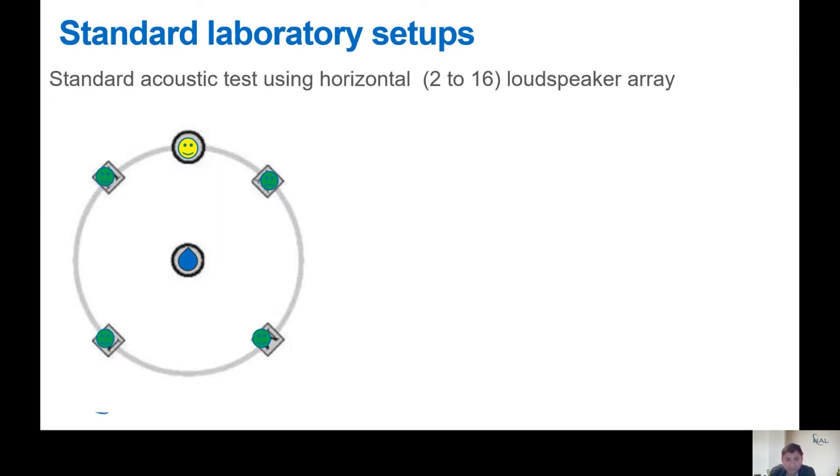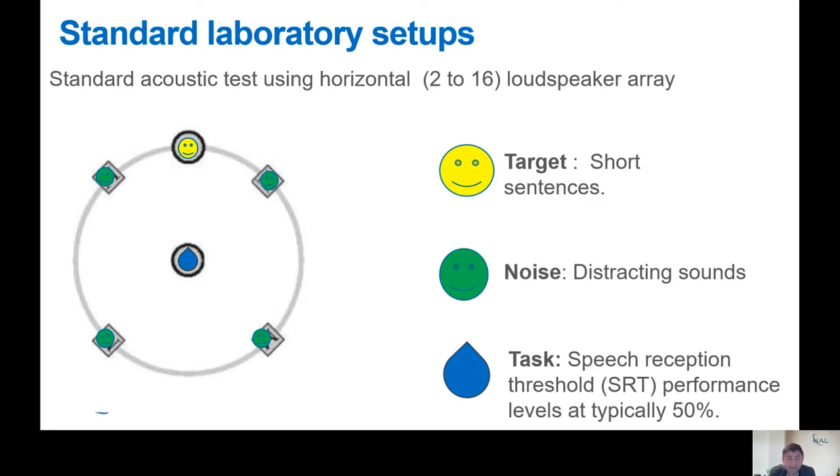What is the standard laboratory setup? The figure illustrates a standard laboratory setting we used at the labs. It comprises five speaker arrays. Typically a target is positioned to the front and the noises are positioned around the listener. Often the target comprises short sentences, and the noises comprise many distracting sounds. The task of the listener sitting at the center array comprises recalling the words in the short sentences. We often alter the level of the target and the noise in such a way that the listener can only recall about 50% of the words in the short sentences.